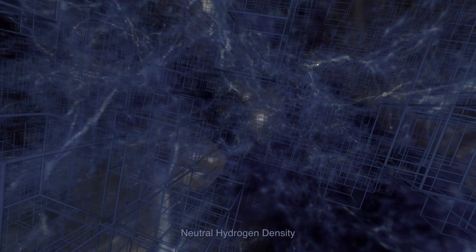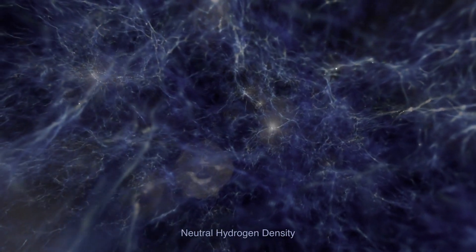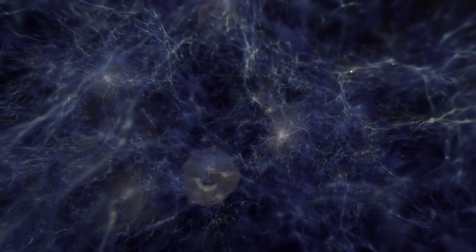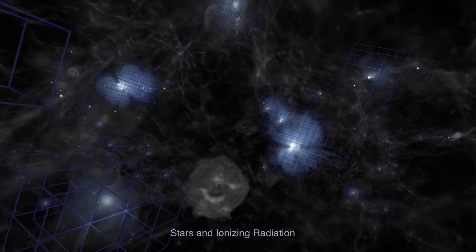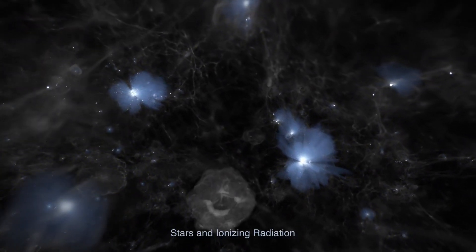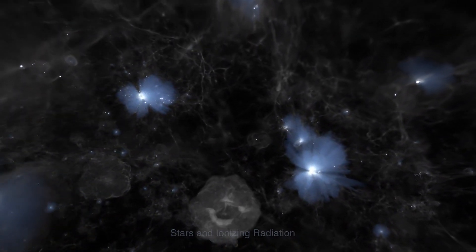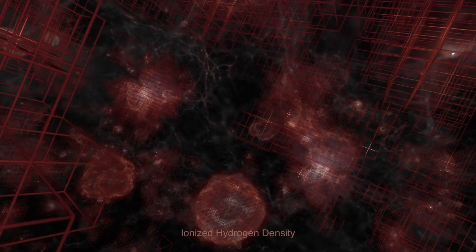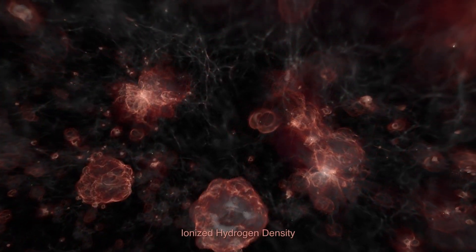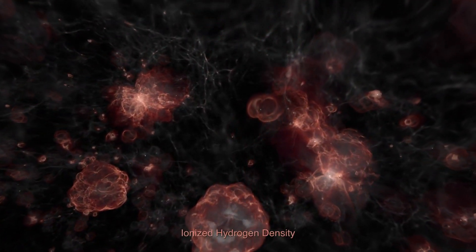Cool neutral hydrogen gas traces the dark matter that forms filaments and halos. The most massive stars produce tremendous amounts of ultraviolet light, ionizing the surrounding gas. The resulting clouds of ionized hydrogen reveal galaxies where stars had recently formed.